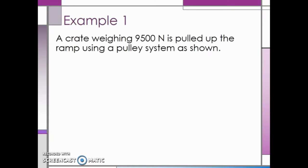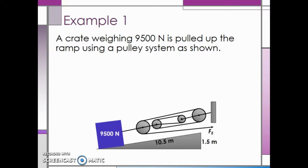In the previous video, we discussed how to find the total mechanical advantage of a compound machine. Let's now take a look at an example. We have a crate weighing 9,500 newtons that is pulled up the ramp using the pulley system shown below.